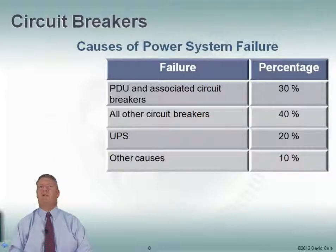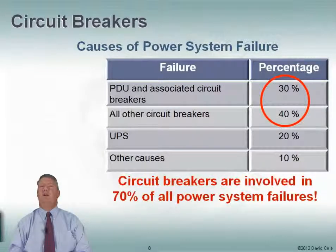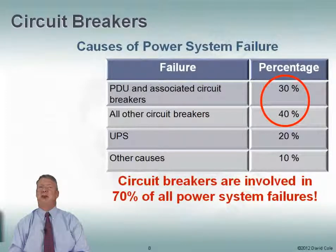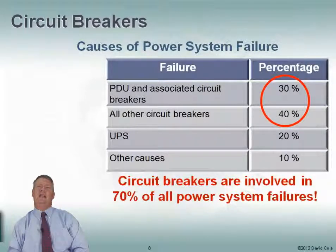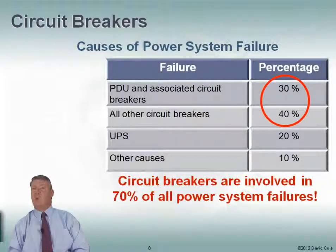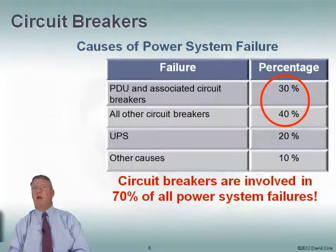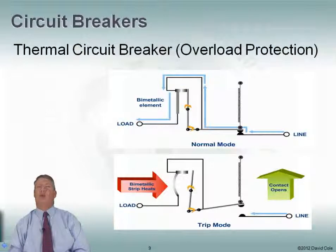Causes of power system failures: PDUs, circuit breakers, UPSs, and other causes. 70% of all power system failures involve circuit breakers, so it's very important to understand them. When circuit breakers are a problem, it's typically one of two things: bad circuit breaker coordination — which we just talked about — or not understanding when the circuit breaker is supposed to trip.